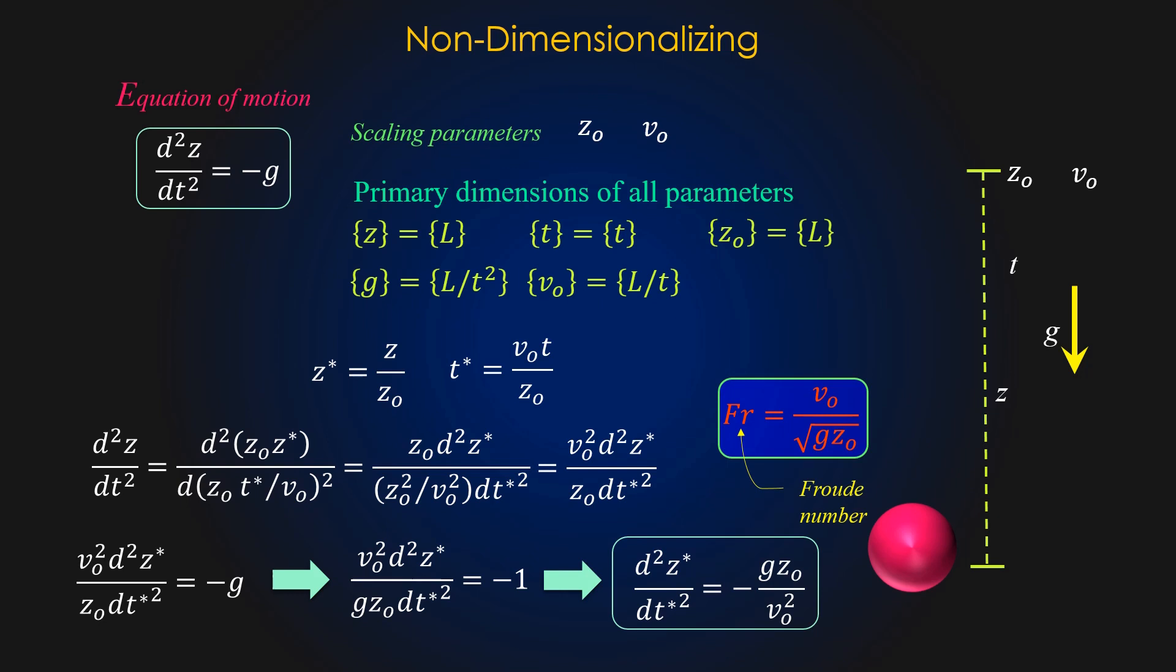There are two key advantages of this non-dimensional equation. First, it increases our insight about the relationship between the key parameters. Like doubling the v0 has the same effect as decreasing z0 by a factor of 4.